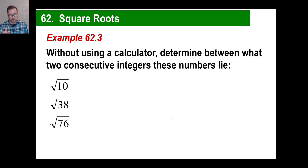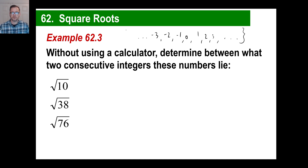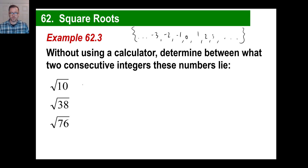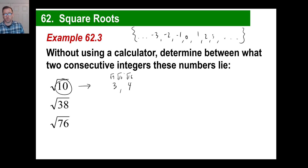Without using a calculator, determine between what two consecutive integers these numbers lie. Knowing your square roots — what two integers does the square root of 10 fall between? The square root of 9 is 3, and the square root of 16 is 4. So the square root of 10 falls between 3 and 4.